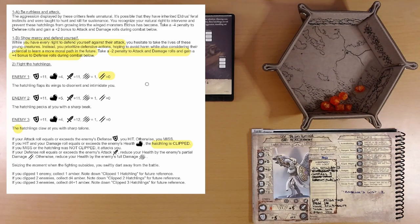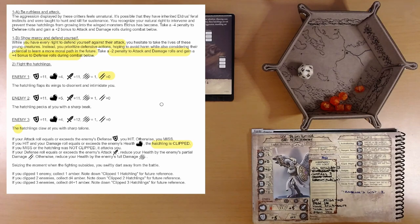So that's enemy one. And I believe we succeeded in not taking any damage and not clipping it. Okay. Enemy two. The hatchling pecks at you with a sharp beak.